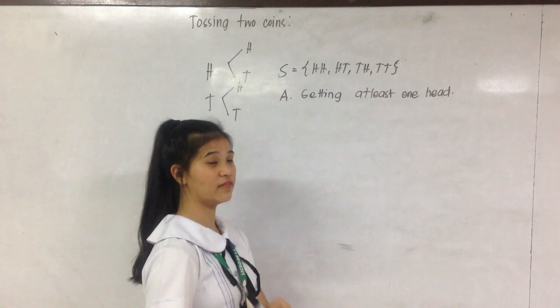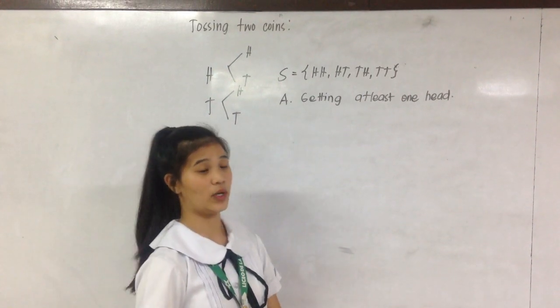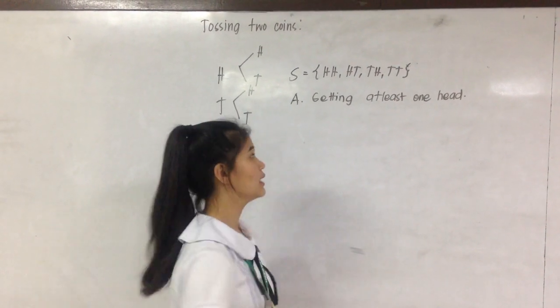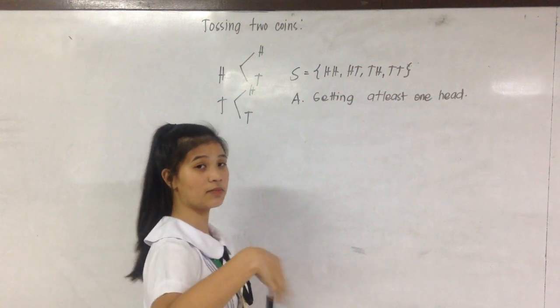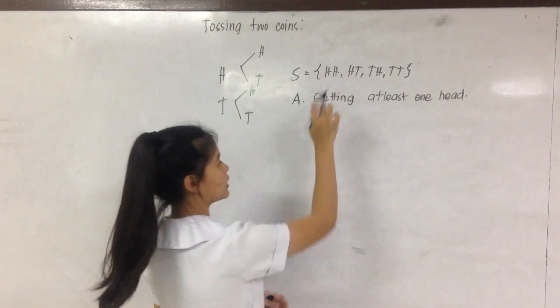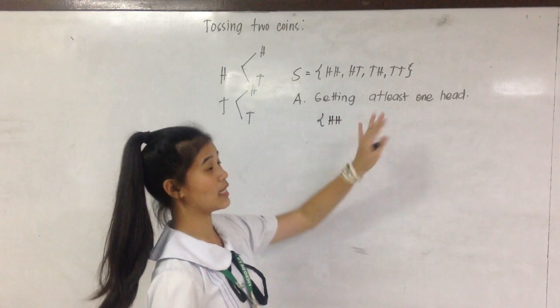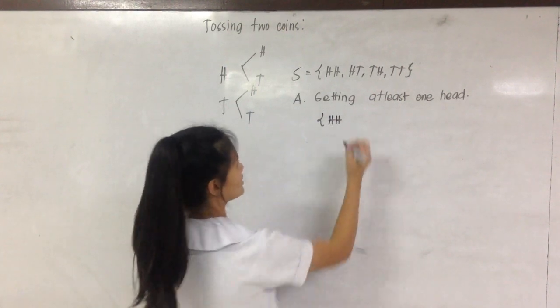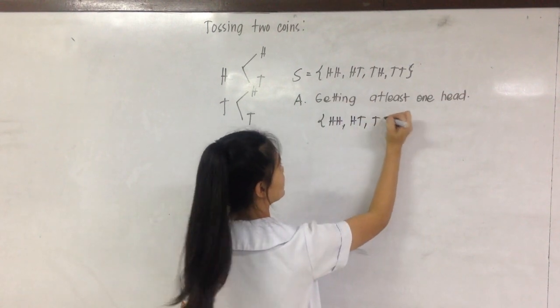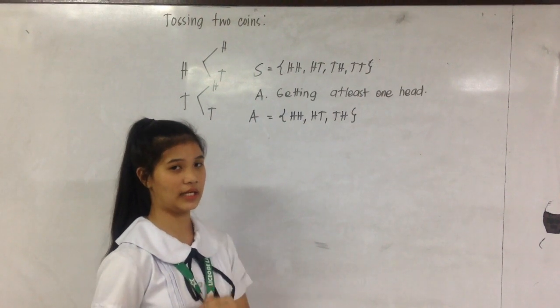What if we have an event? This is the event, getting at least one head. When we say at least, the minimum value can be one and it can be more. So in this sample space, H-H can be part of event A because it has at least one head. H-T can be too and T-H. So this is the set of event A.